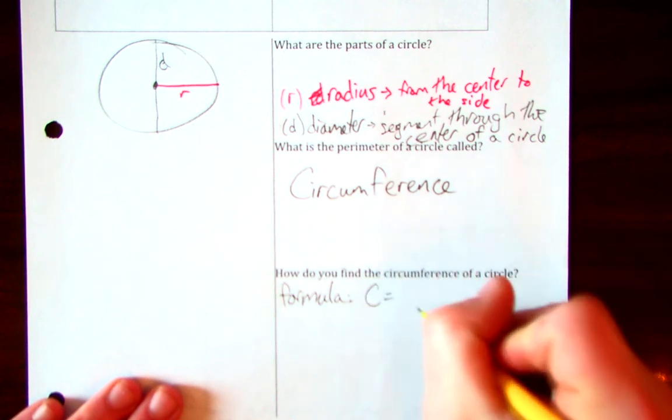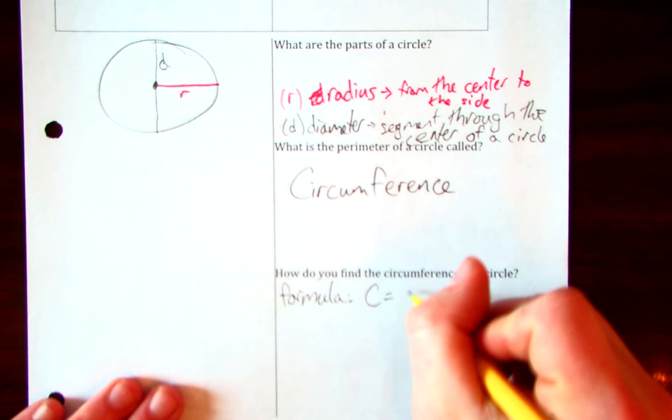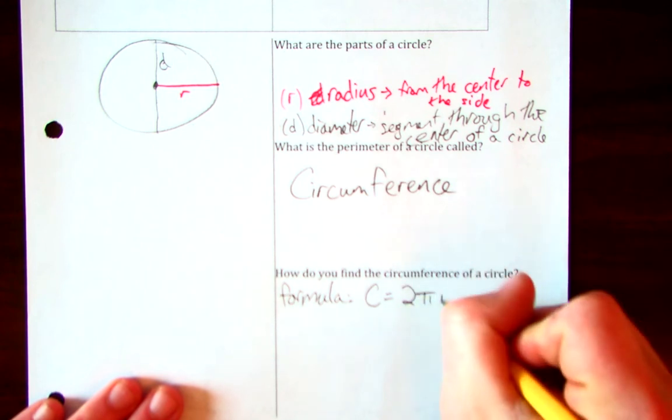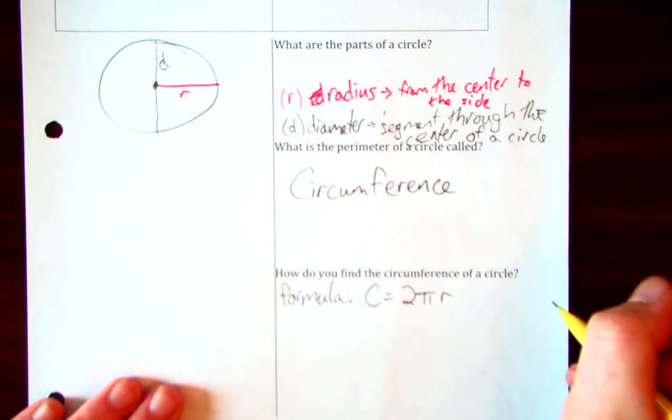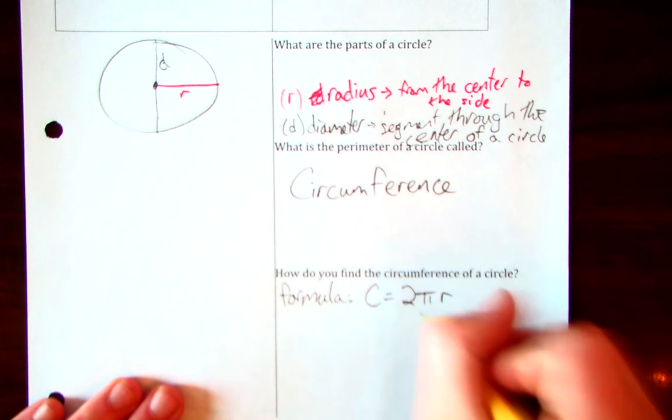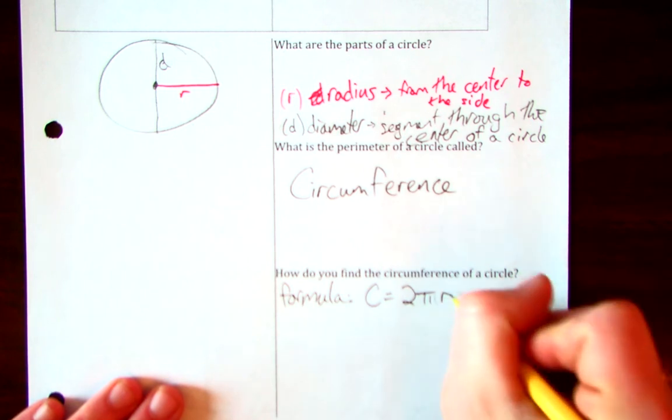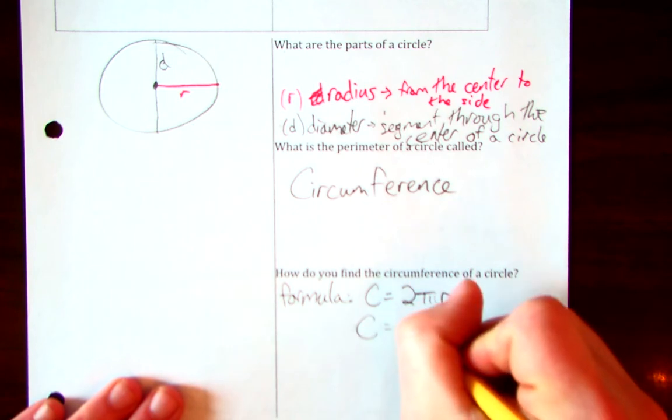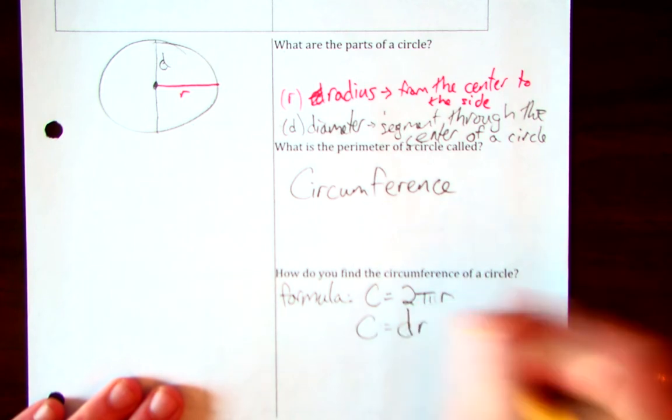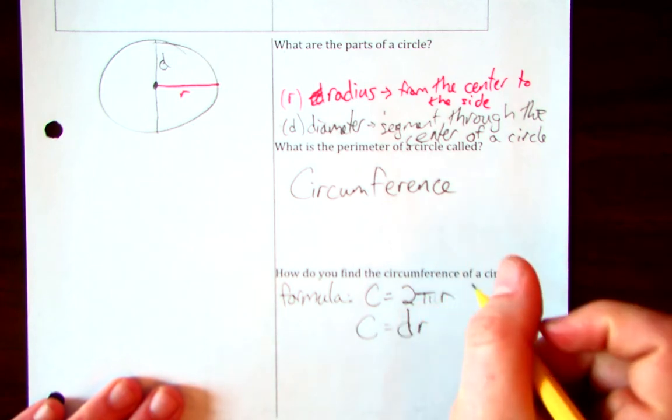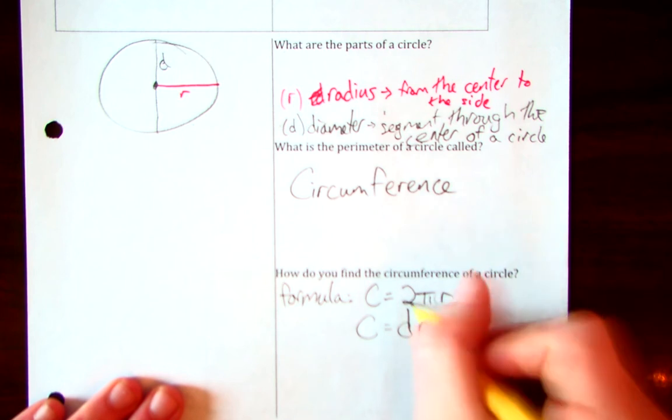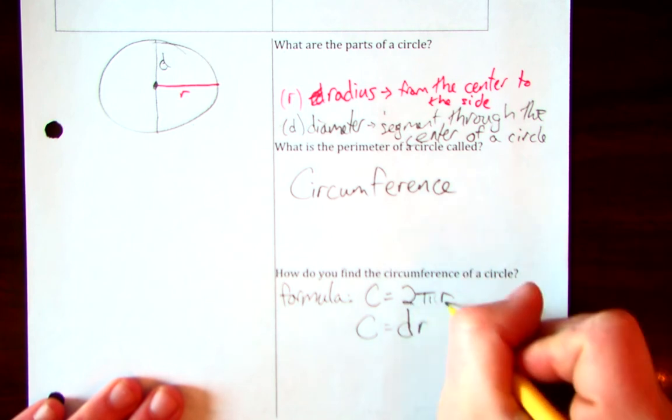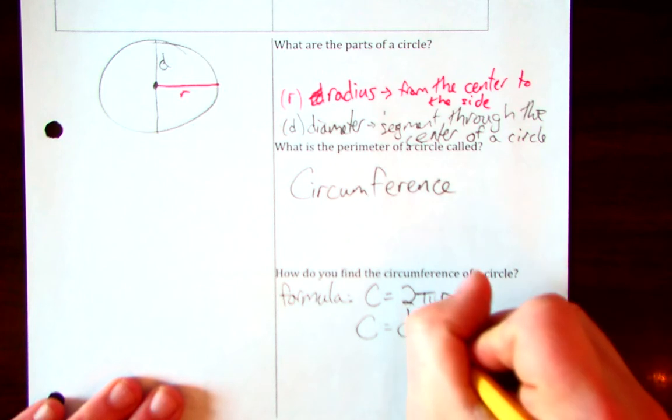We can have C, which is circumference, is equal to 2 times pi times R. This is where you know the radius, or you can be able to find the radius. Another formula would be C is equal to the diameter times pi. That makes sense because 2 times the radius is the same as the diameter.